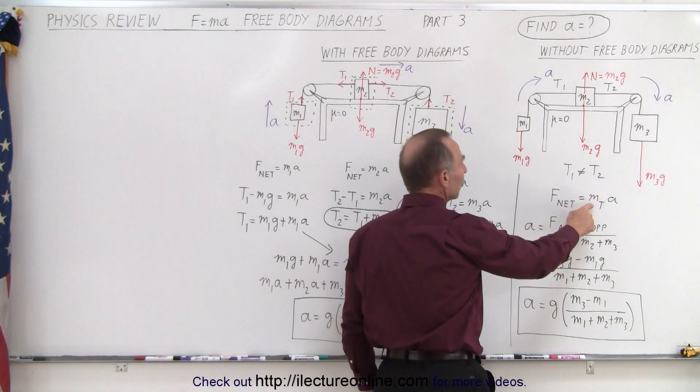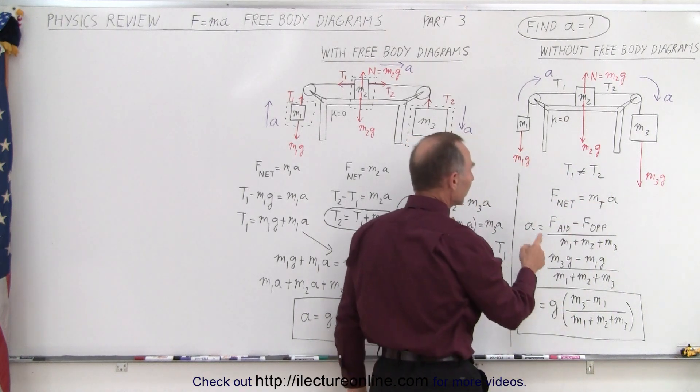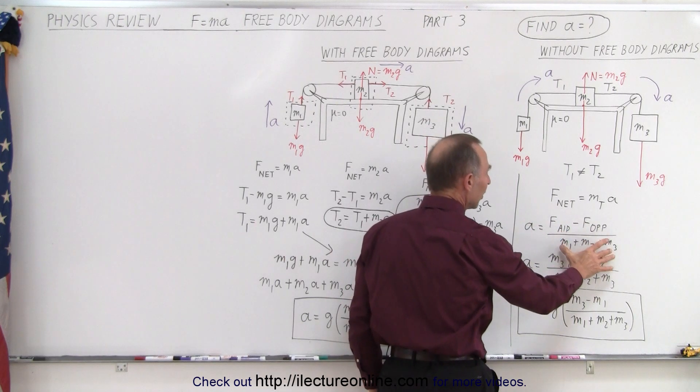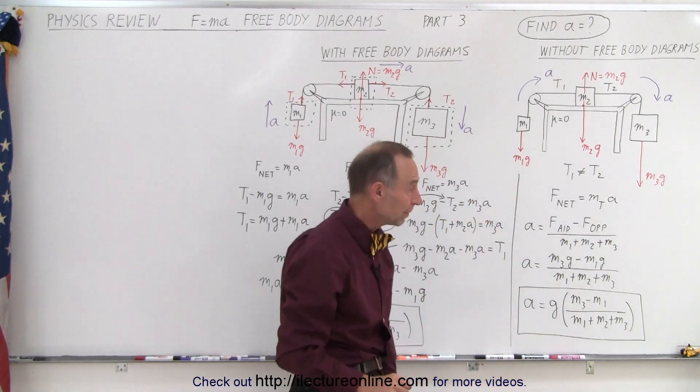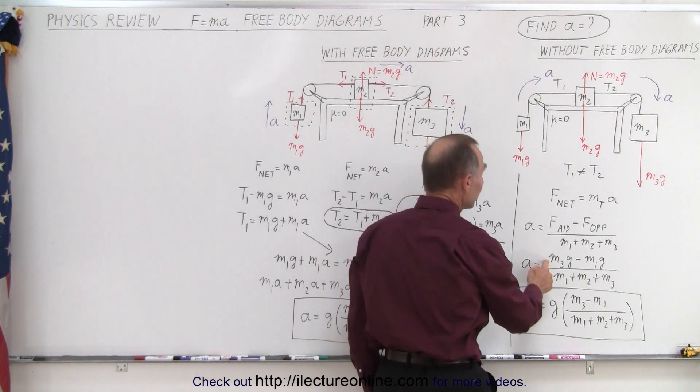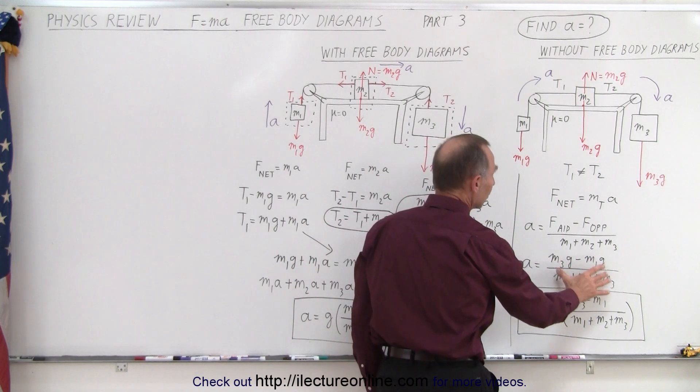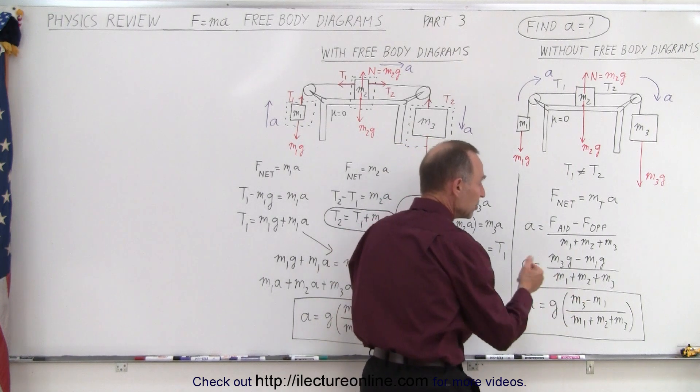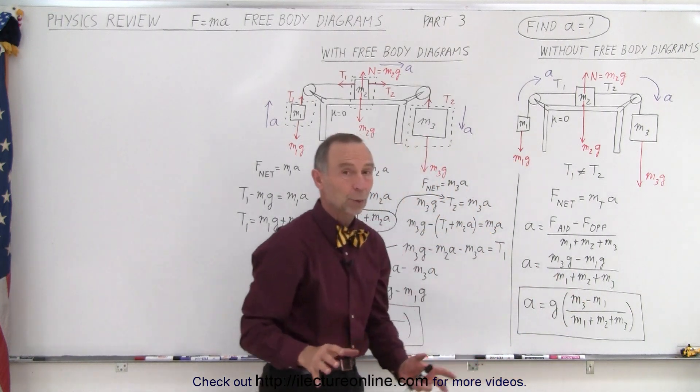And so the net force equals the total mass times acceleration becomes acceleration equals the difference between the aiding force minus the opposing force, divided by the total mass of the system. The aiding force is M3G, the opposing force is M1G, total mass M1 plus M2 plus M3. So for the aiding force, you get this equation. It's very quick and simple.